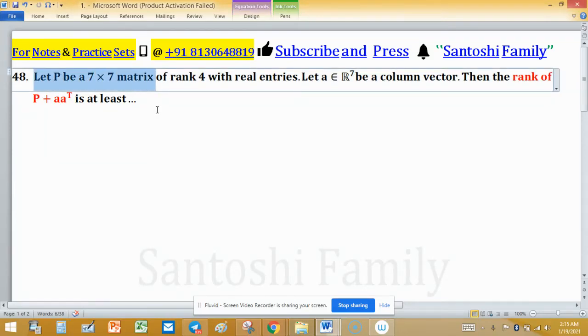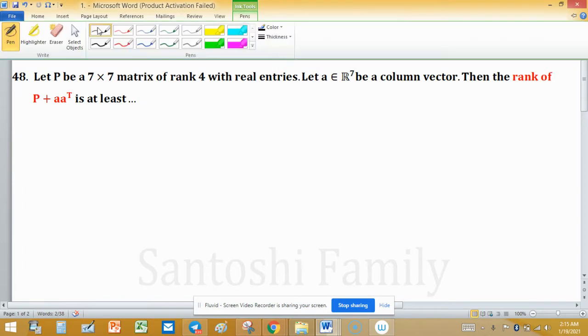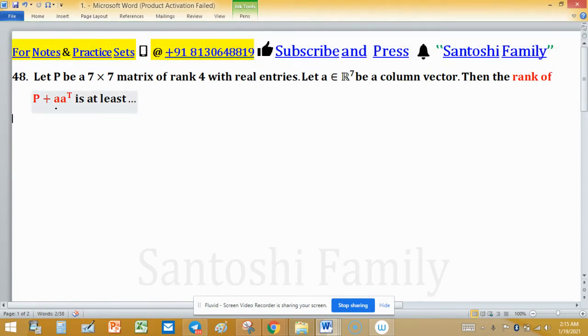Let P be a 7×7 matrix of rank 4 with real entries. Let A belong to R^7 be a column vector. Then the rank of P plus A A transpose is at least - it is important word, at least, means the possible rank of P plus A A transpose, but in least.